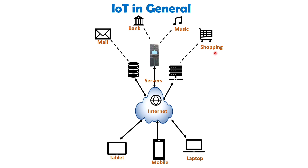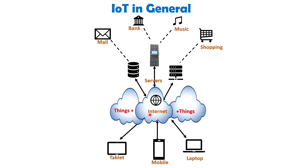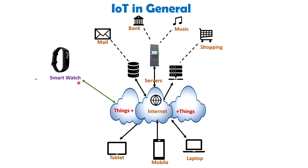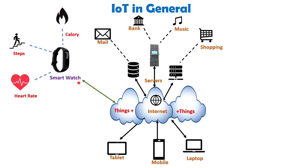Now let's focus on the 'Things' aspect of IoT. By integrating Internet capabilities into various devices and gadgets, we create the Internet of Things. This advanced technology allows us to perform numerous tasks to simplify and enhance our lives. For example, with an Internet-enabled smartwatch, you can measure parameters like heart rate, count your steps, and track your calorie consumption throughout the day, thereby managing your health more effectively. Additionally, historical data from these devices can help improve your diet.